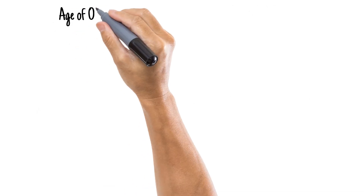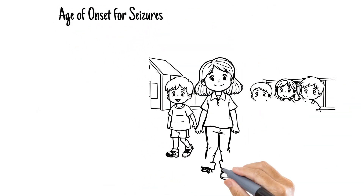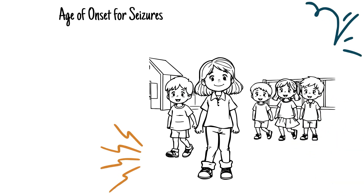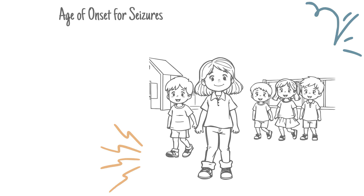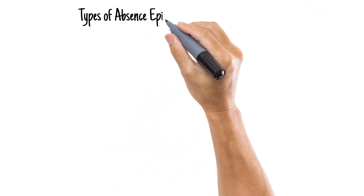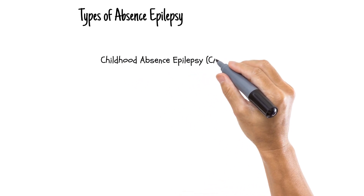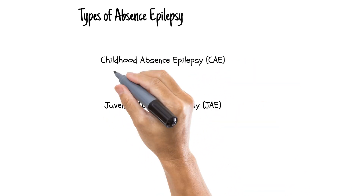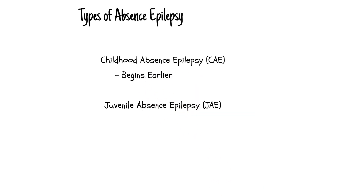What age do absence seizures begin? Absence seizures typically start in childhood, most commonly between the ages of 4 and 10 years old, with a peak around the age of 6. Girls are slightly more likely than boys to experience them, and there are two main types: Childhood Absence Epilepsy, or CAE, and Juvenile Absence Epilepsy, or JAE. CAE begins earlier, while JAE often starts in adolescence and may be more likely to continue into adulthood.